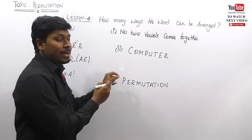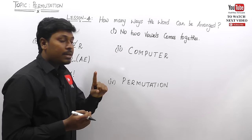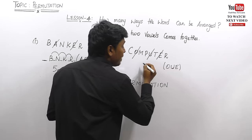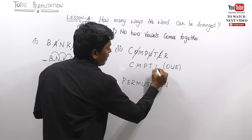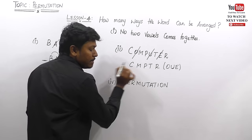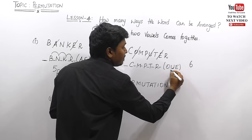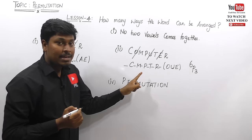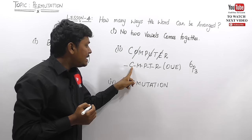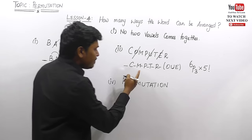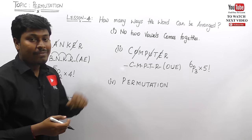Second example: the word COMPUTER. How many ways can it be arranged so that no two vowels come together? Step 1: vowels are O, U, E — place them in a bracket. Remaining consonants are C, M, P, T, R — five consonants. Count the gaps: there are six places. We place the three vowels in these six positions: 6P3. The five consonants can be arranged in 5 factorial ways. Final answer: 6P3 × 5 factorial.